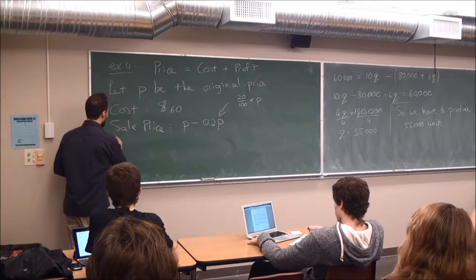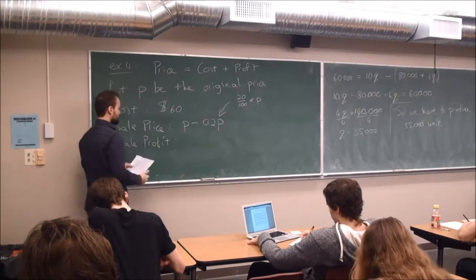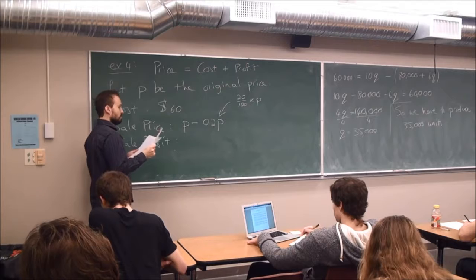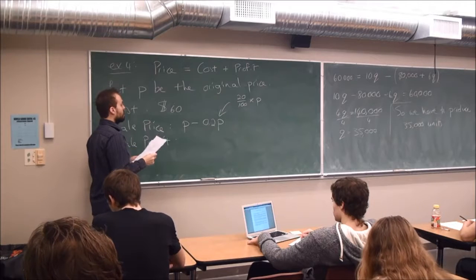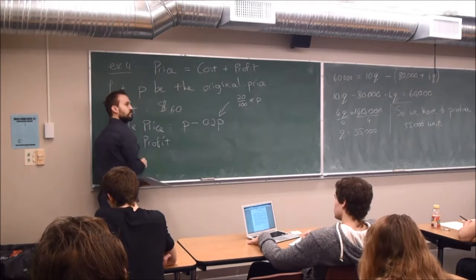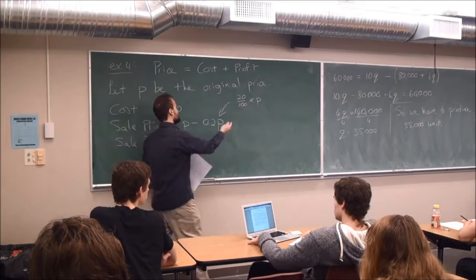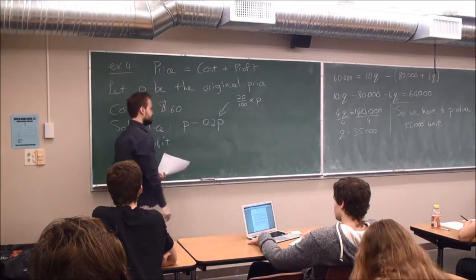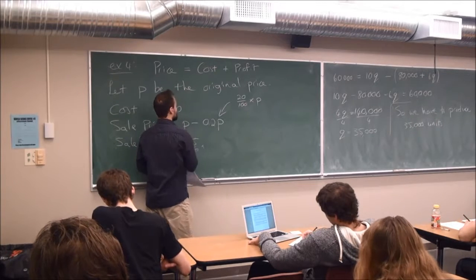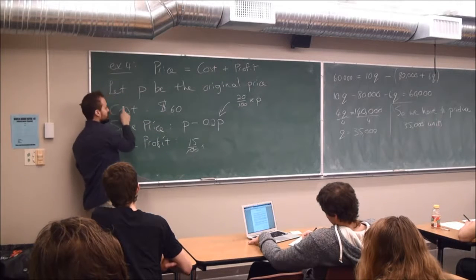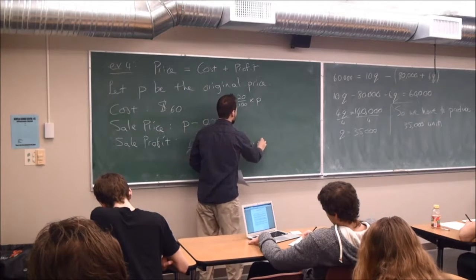Then what else do I need? I want the profit. Let's say here sale profit. In the sale scenario, I want the profit to be 15 over 100 times C? What is C? There's no C variable. Cost. So 60. And cost is 60. This is 0.15 times 60. But you can decide which one you like. It doesn't matter. I am not a fan of the fraction. Somehow a decimal number feels better. It's the same.